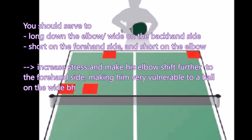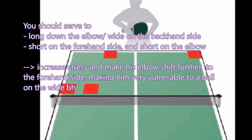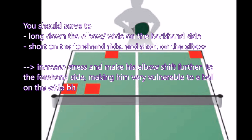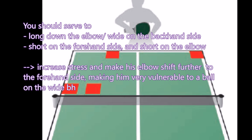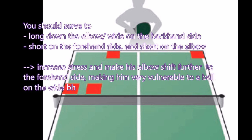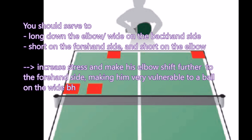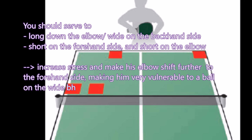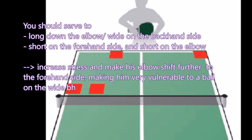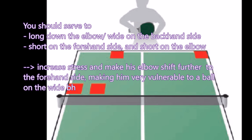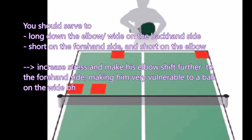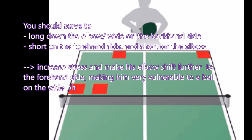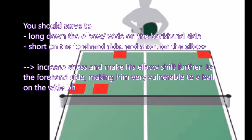Vary the position of your service and it will make him very vulnerable. For example, serve the ball long to his elbow — he will move further to the forehand side — and then attack to the wide backhand to win the ball. Serve long to the elbow and attack to the wide backhand, or serve short to the forehand side, make him move, and attack to his elbow or his wide backhand. This tactic is very effective.